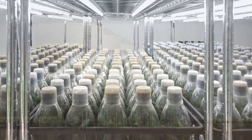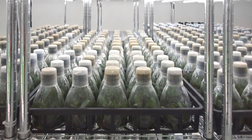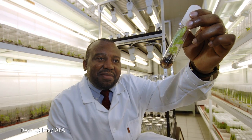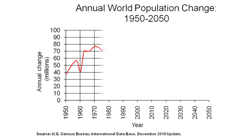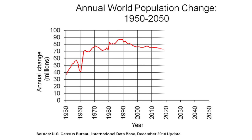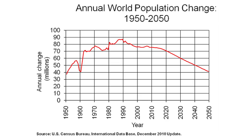In the developed world, significant investments were made both by government and by private industry in research to improve crop productivity. Looking ahead, the world population is projected to increase to 9 billion people by the year 2050. The annual population growth is expected to decline from approximately 75 million people currently to about 40 million by the year 2050. However, this translates on average into about 1.2 million additional people to feed each and every week for the next 40 years.